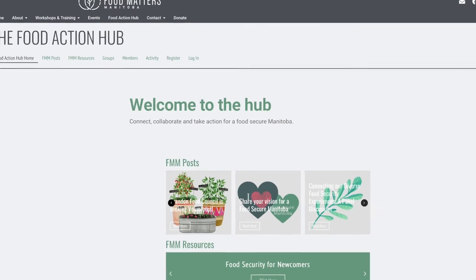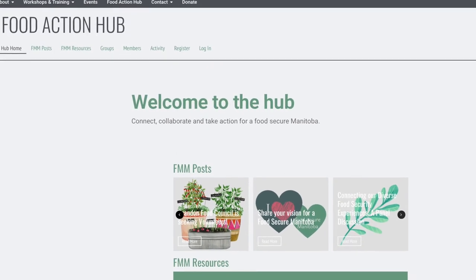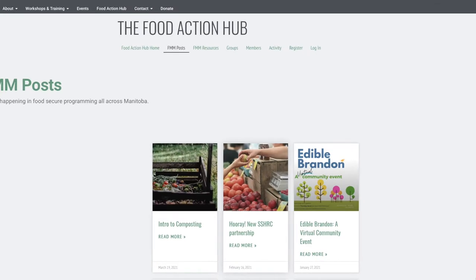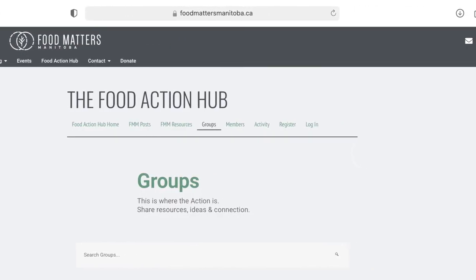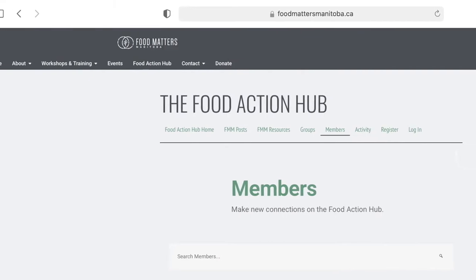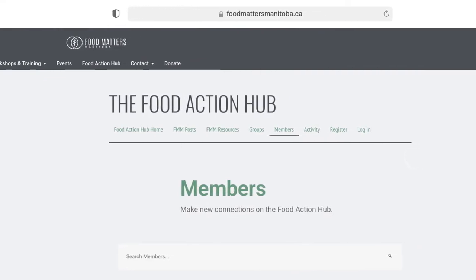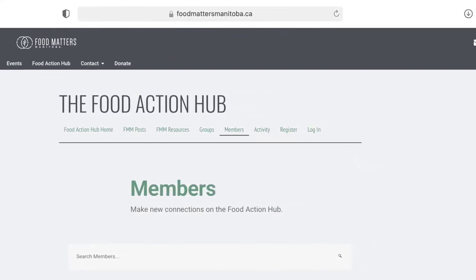FAH is an online, province-wide member network that allows its members to access a library of relevant resources, participate in facilitated discussion forums, and connect with other members to learn and find support to initiatives that address food security issues.